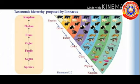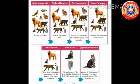Observe the illustration. Kingdom Animalia includes all animals. Phylum Chordata includes all vertebrates — vertebrates are organisms which have a backbone. The class Mammalia includes vertebrates that feed their young ones with milk.